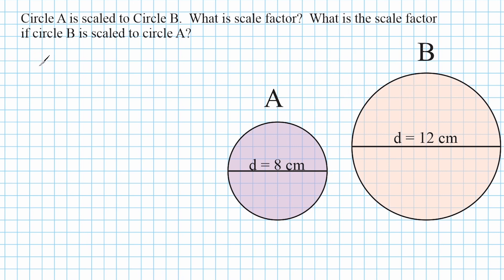Now remember, to find the scale factor, we are starting with the new shape that we are going to. And we are dividing it by where we start, or the old shape. So if we're starting by going from A to B, B would be considered our new shape. And with the circle, what we do is, we just take the length of its diameter, which is 12. And we are going to divide it by the length of the old circle's diameter, which is 8.